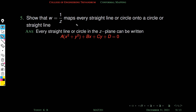Next problem: show that w = 1/z maps every straight line or circle onto a circle or straight line. Every straight line or circle in the z-plane can be written as A(x² + y²) + Bx + Cy + D = 0. If A = 0, this is a straight line; if A ≠ 0, it is a circle.